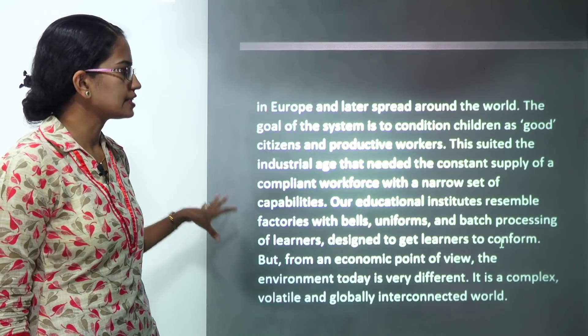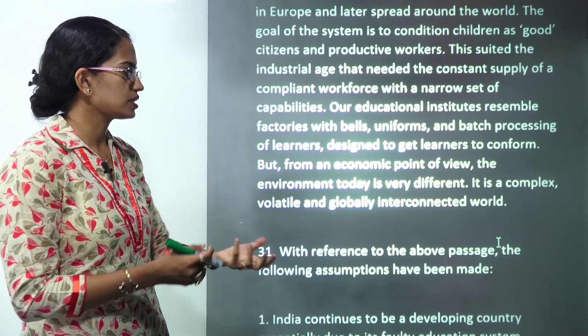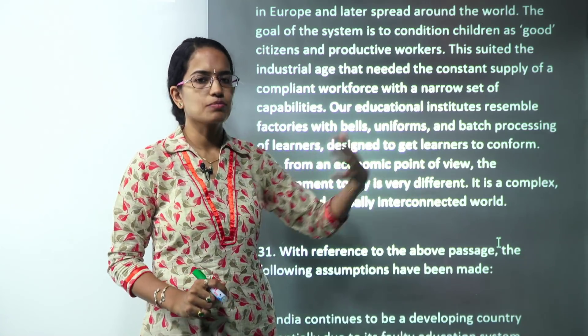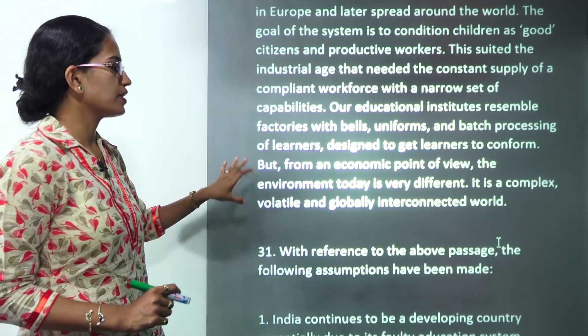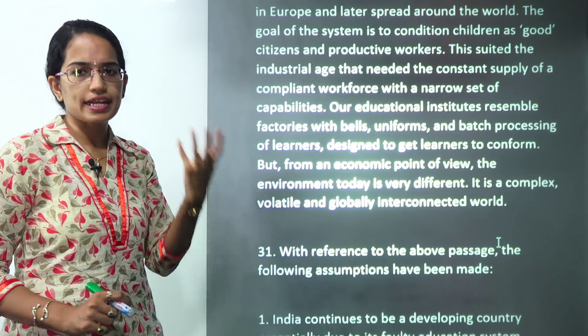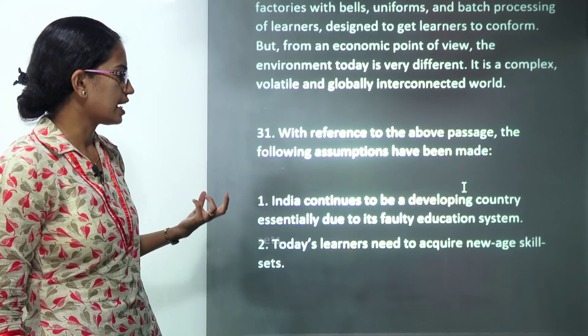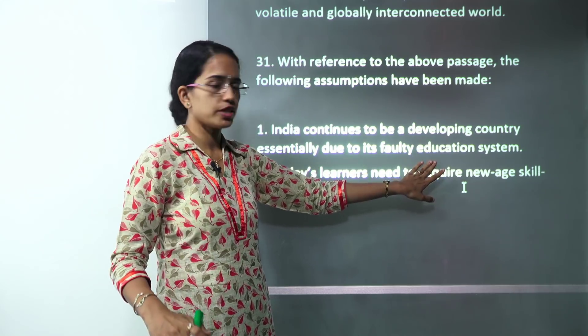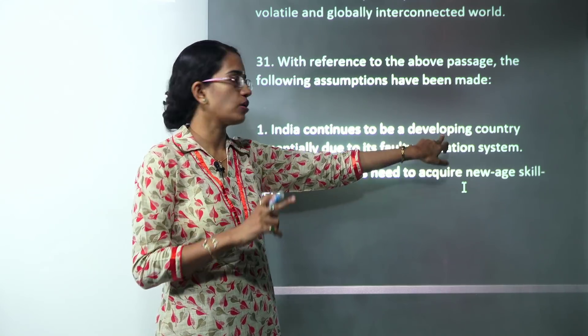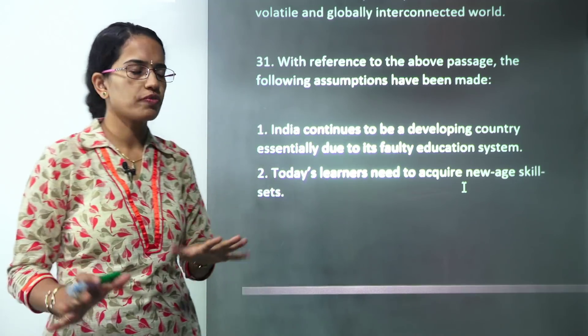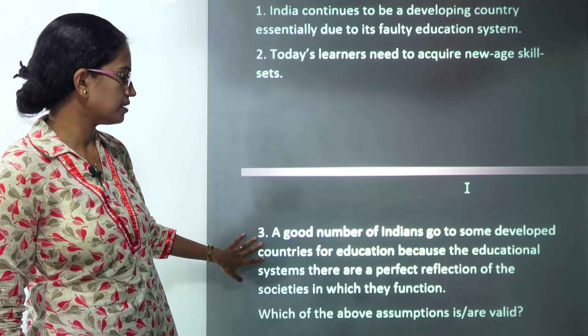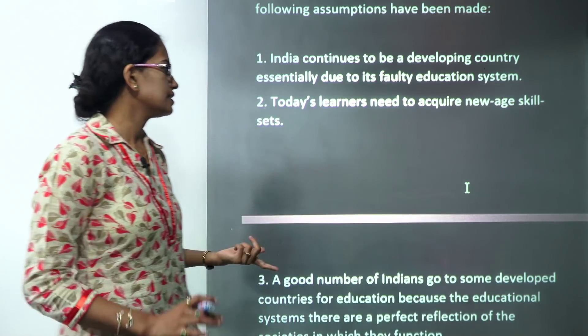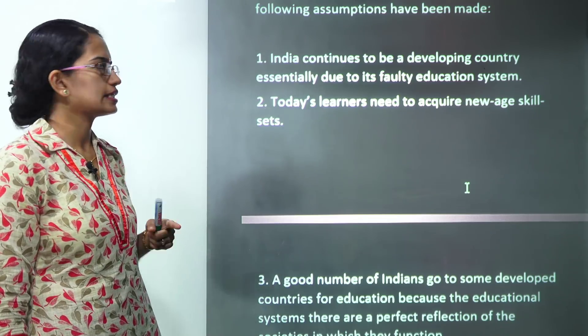The next passage talks about India's educational system. It talks about how the educational system is much more backward where we are talking about the standard books, uniforms and batch processing of learning. However, in today's world, what we require is a globally interconnected networking and understanding. India continues to be a developing nation due to its faulty education system is not mentioned. We talked about faulty education system, but that's not a cause for developing nation. So first and third becomes incorrect. And second, that today's learners need to acquire the new age skill sets, that's correct. So two only is the correct answer here.